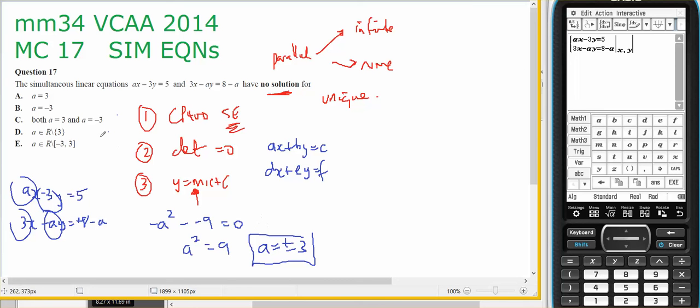So it could be this one, it could be this one, it could be this one, it won't be those. These are the values for unique, because for it to be parallel, it has to be plus or minus 3. Both of them will give parallelness. I suggest one of them will be infinite and the other one will be none. They both could be none though, so I need to check it.